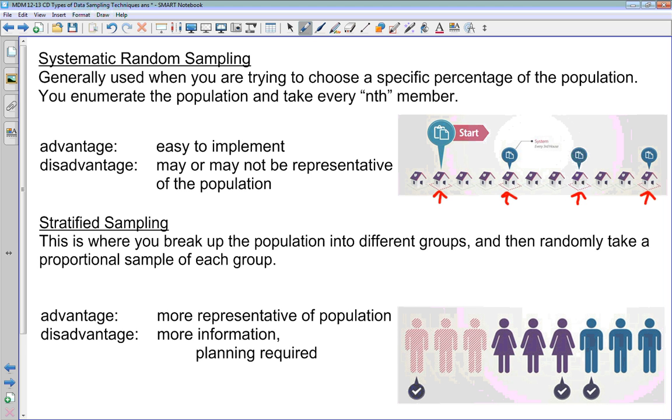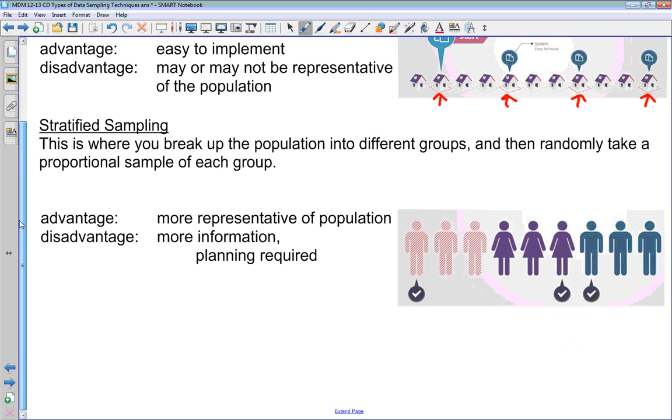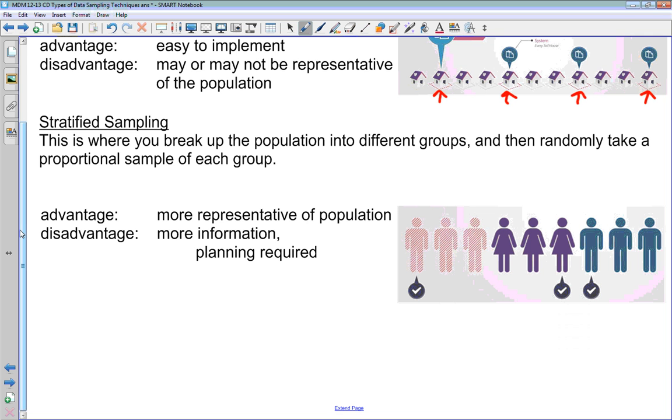So now we move into methods that are a little bit more complicated. Next up is stratified sampling. This is where you take your population and you break it up into different groups. Then from each of these groups you are taking a sample which is proportional to how big that group is relative to the entire population. In our picture here, we've divided our population up into what looks like three groups: men, women, and men who are on fire or something like that. They are all equally represented in our population, so we're going to take one from each of these groups and survey them.